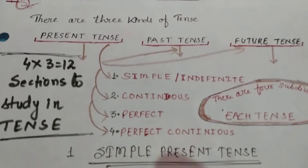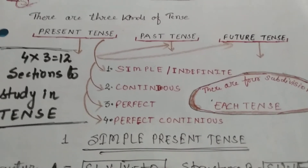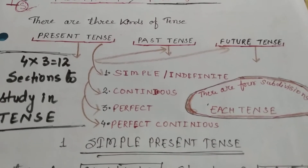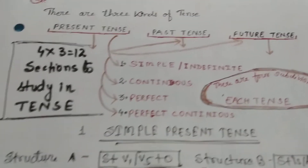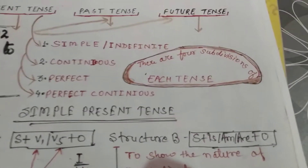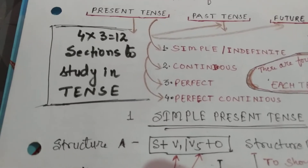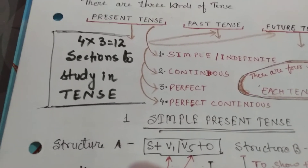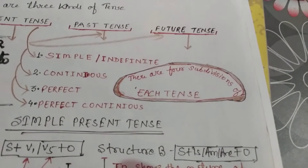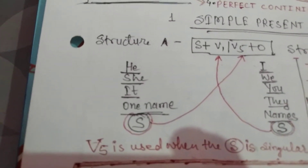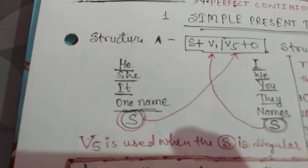Now we are coming to our first tense — simple present tense. What is a simple present tense? What is its structure? How are we going to use it? There are two structures: Structure A and Structure B. Structure A is: Subject + V1/V5 + Object. Structure B is: Subject + is/am/are + Object.